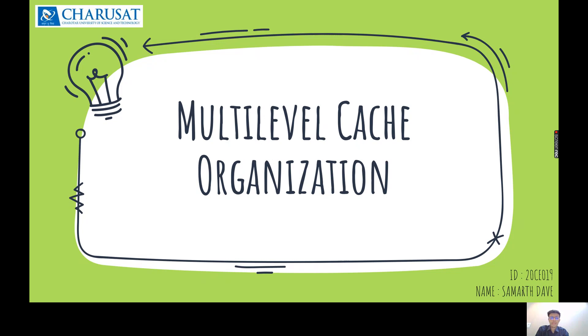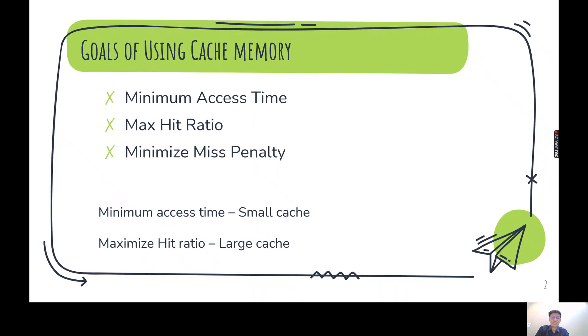Cache memory has multiple goals. What are the goals of cache memory? Goals of cache memory is to reduce the minimum, reduce the access time. That is cache memory should have minimum access time.